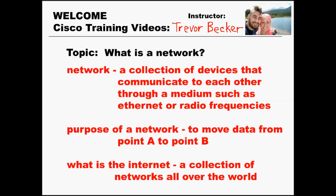Let's recap: a network is simply a collection of devices that communicate to each other through a medium such as Ethernet or radio frequency. These devices can include servers, firewalls, computers, and printers. The purpose of a network is to move data from point A to point B. And the internet is a collection of networks all over the world that work together to achieve that purpose — to move data.